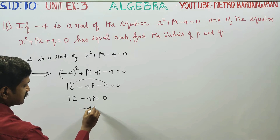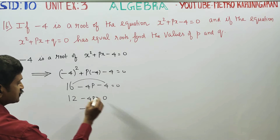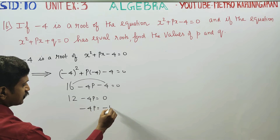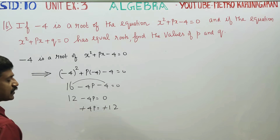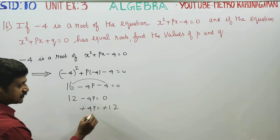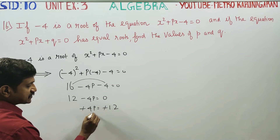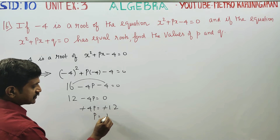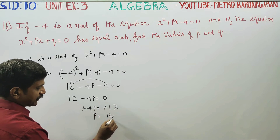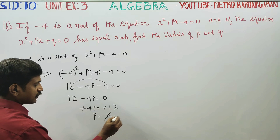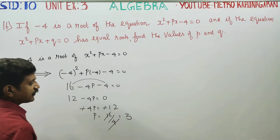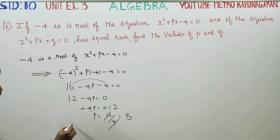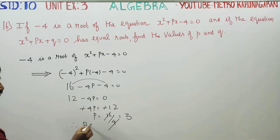From this, minus 4p is equal to plus 12, giving us minus 12. The minus signs cancel, so p equals 12 divided by 4. Simplifying, we get p equals 3. Therefore, p is equal to 3.